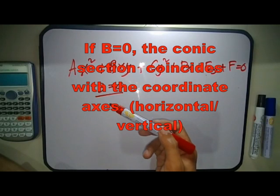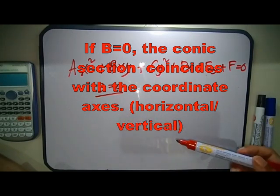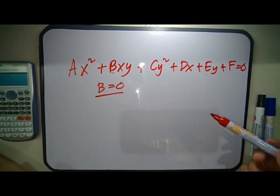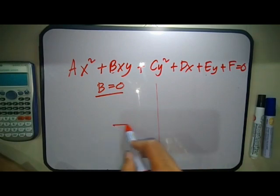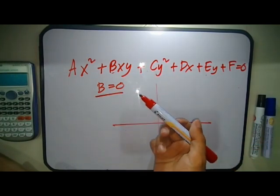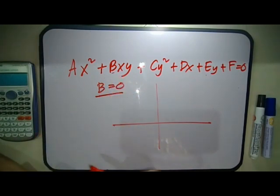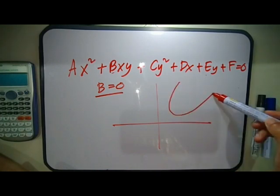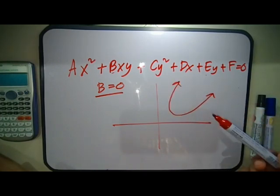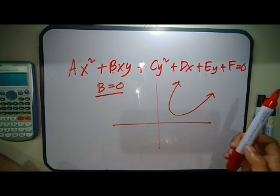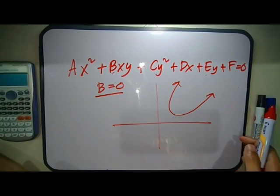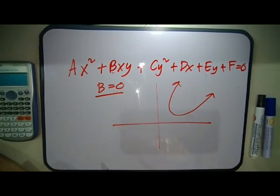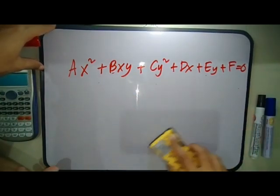For most conic sections, B is zero, meaning the conic section coincides with the coordinate axis — it's either horizontal or vertical. The standard forms of conic sections have no B term. If B has a value, for example in a parabola, it means the parabola has an oblique orientation — not vertical, not horizontal — it has a slope to its opening.